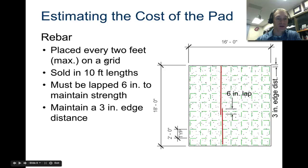Rebar is placed every two feet on a grid. It's sold in 10 foot lengths and it must be lapped six inches to maintain strength. So you can see we have one stick here, one stick here. There's a six inch overlap that you will actually tie together with pieces of wire, and as those things are next to each other and sunken deep into concrete they act as one continuous piece. You also need to maintain three inches edge distance. We have this bar three inches away from the outside edge on this side, three inches away from the outside edge on this side. So if it's 18 feet, we have a 10 foot bar and an eight foot bar with six inches overlap.